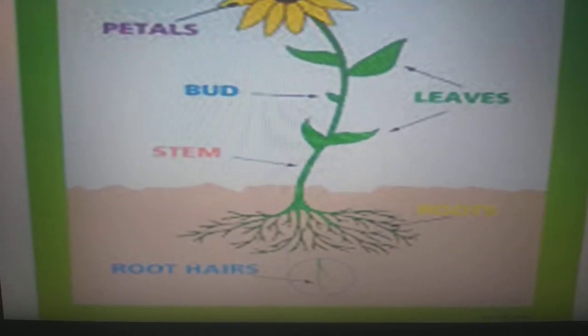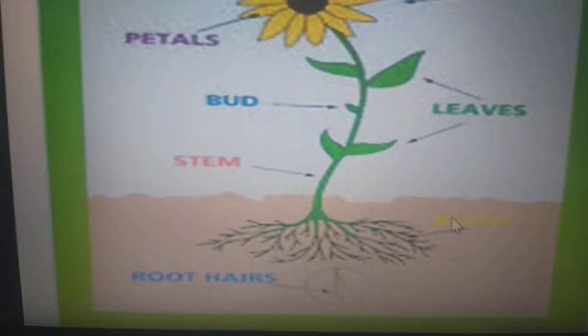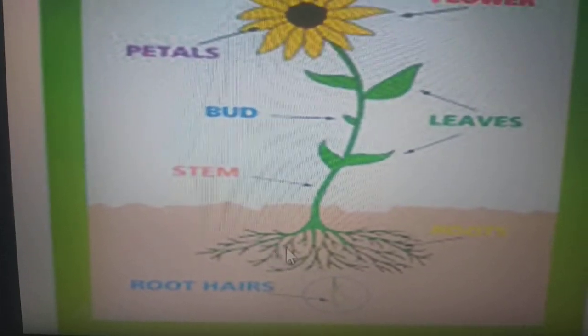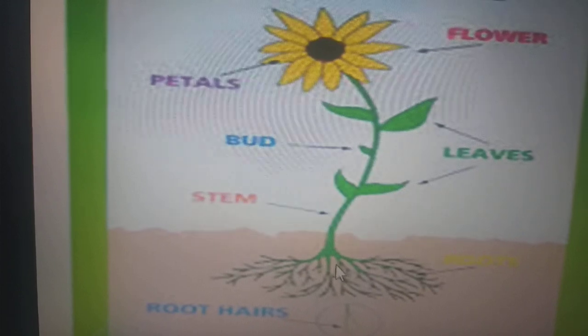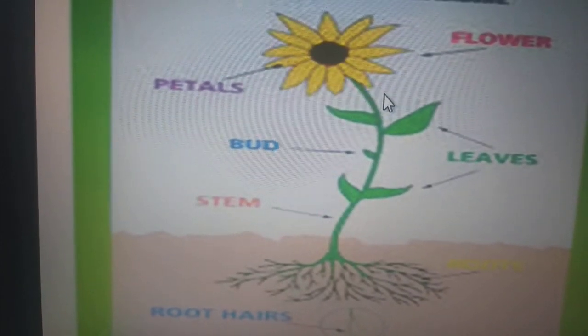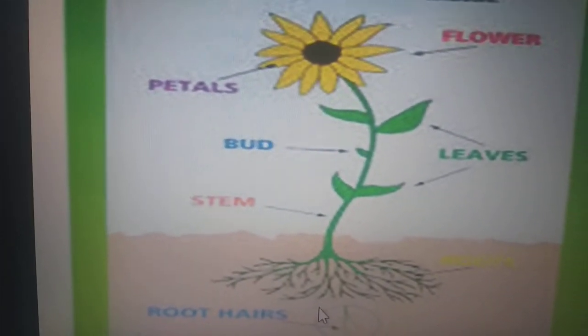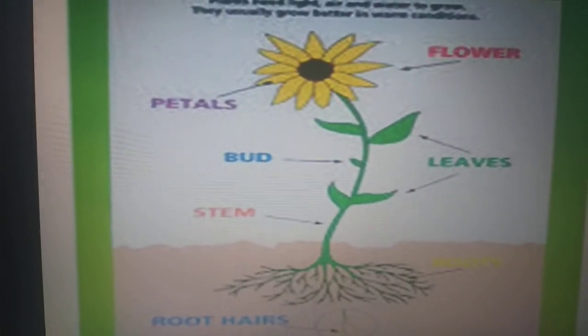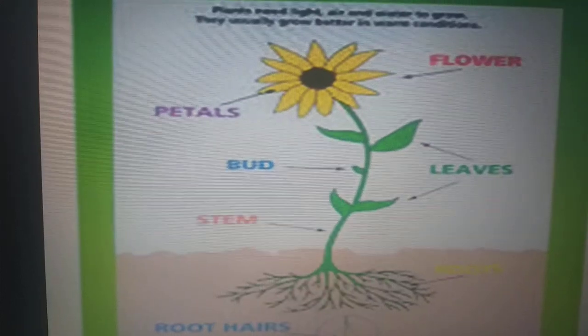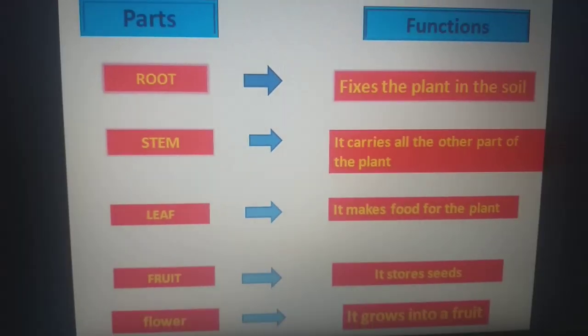See, this is root here. These are root here and the root hairs absorb the water from the soil and transport it to all parts of the plant. So there are two different functions of the root: it fixes the plant in the soil and it absorbs water from the soil.